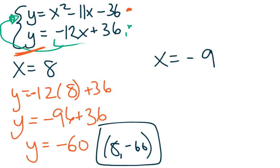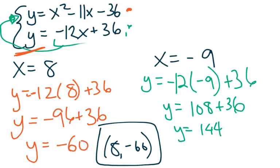And if we plug in the next point, x equals negative 9, into the equation, that gives us y equals negative 12 times negative 9 plus 36. And if we work that out, we get y equals 144. So our second solution point is at negative 9 and 144.